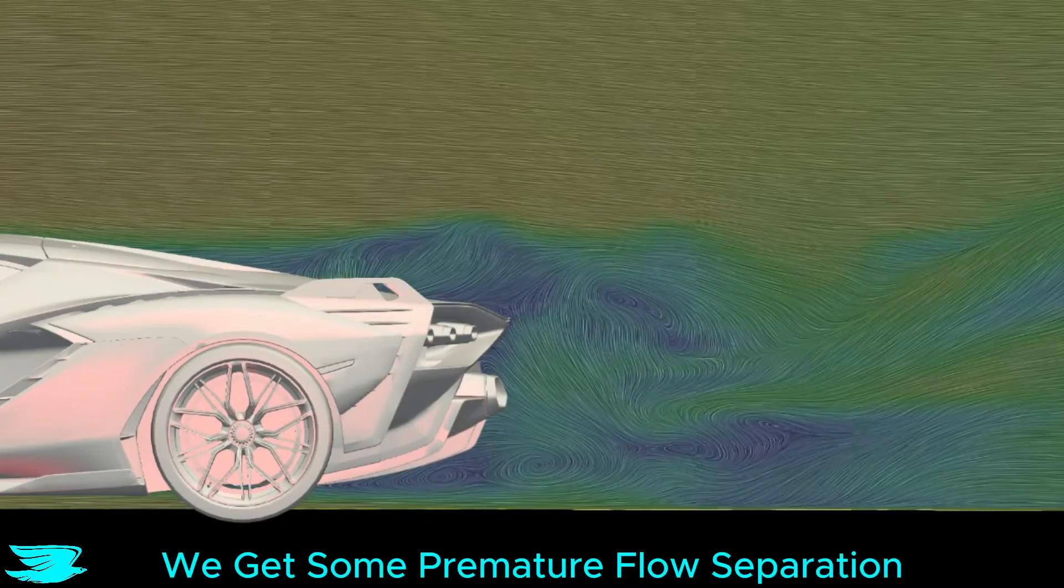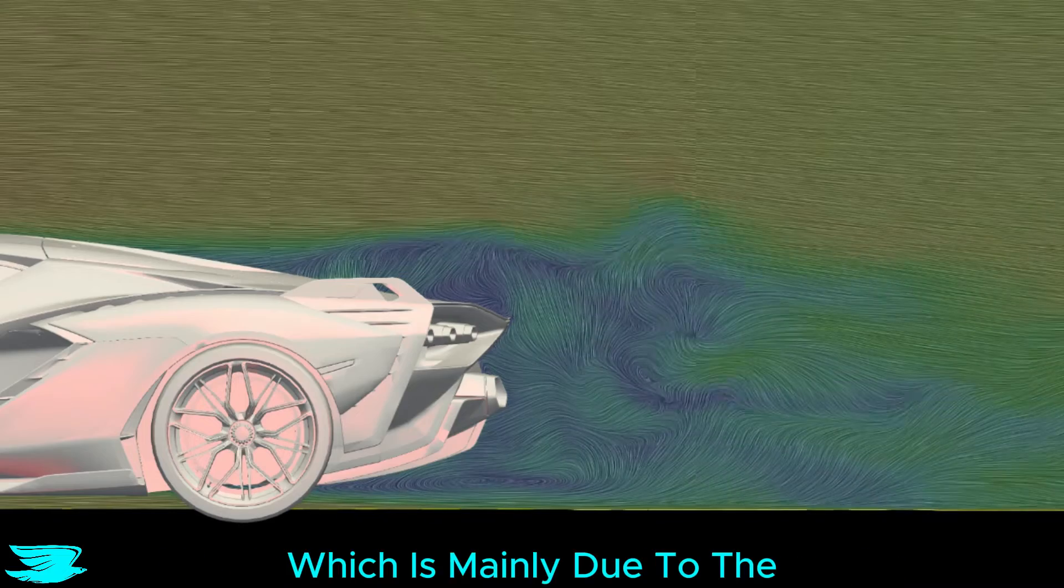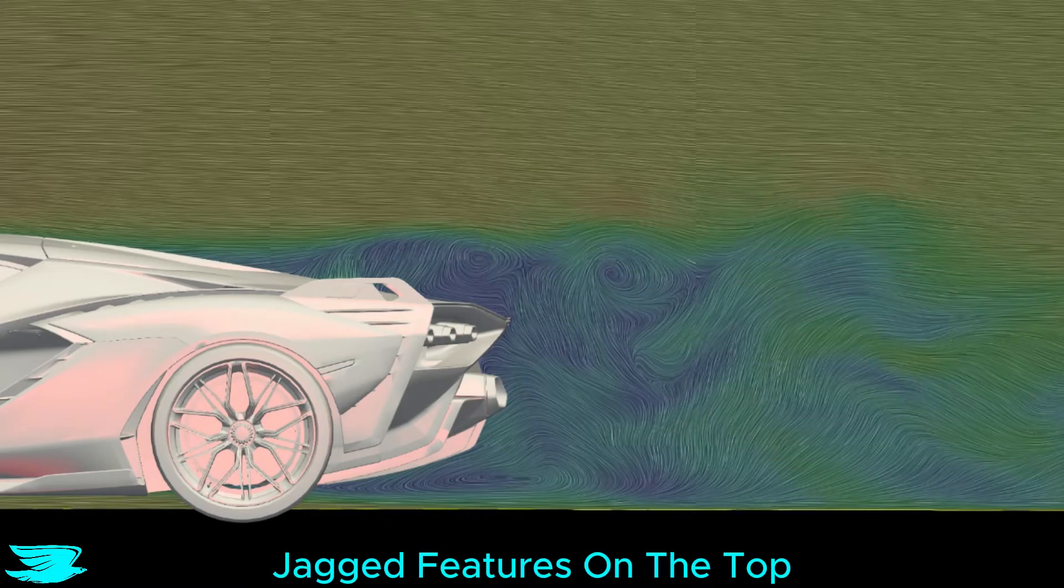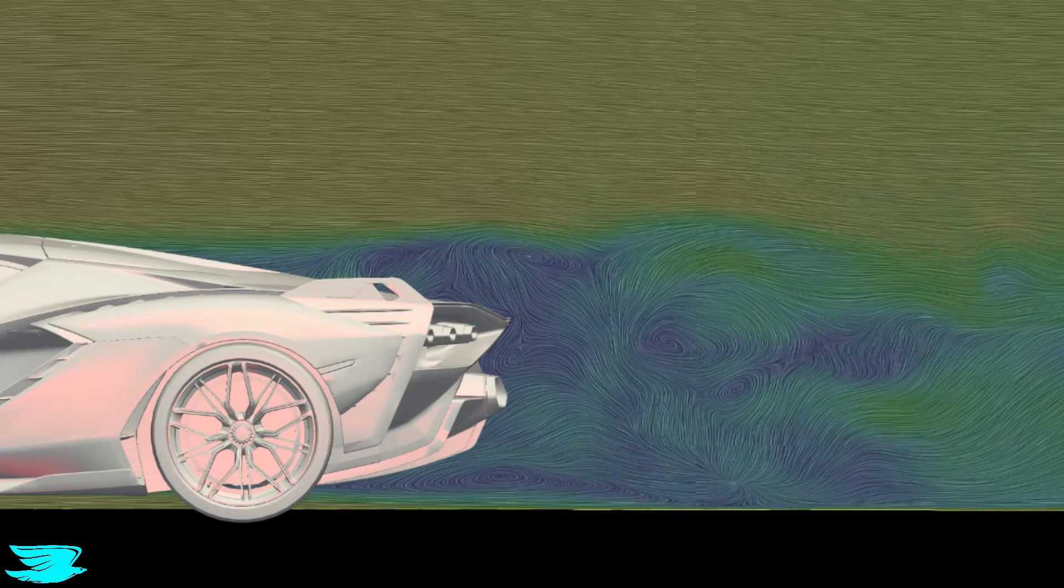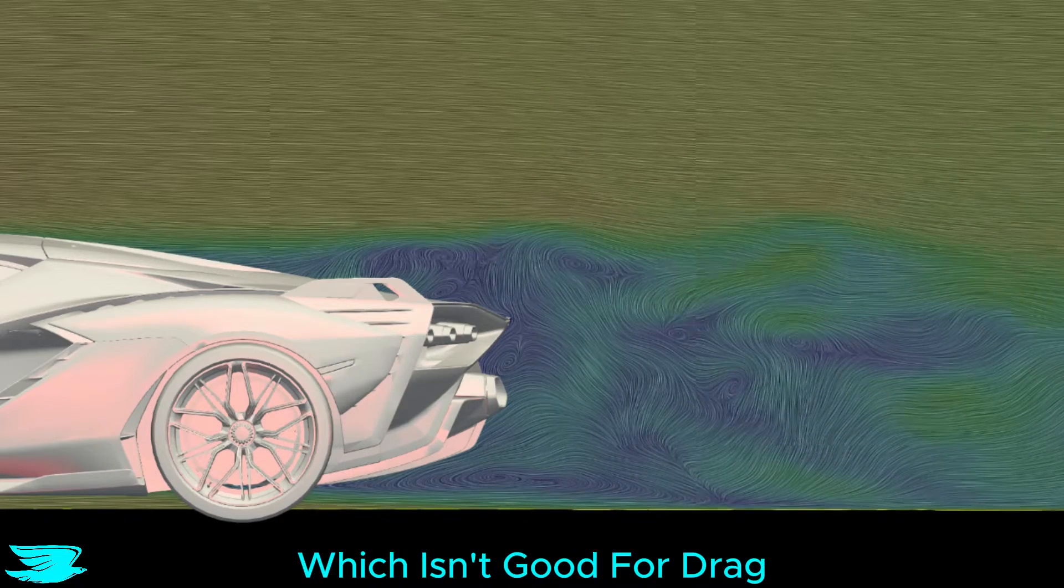But once we get to the back, we get some premature flow separation, which is mainly due to the jagged features on the top, which look great, but aren't that aerodynamic. As such, the wake blows out more than expected. Several vortices form there, which isn't good for drag.